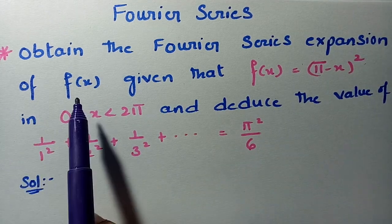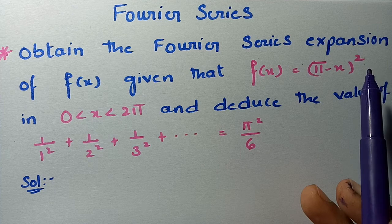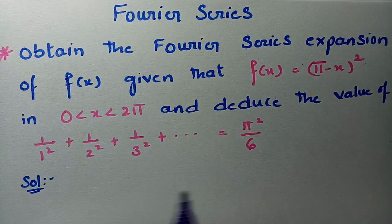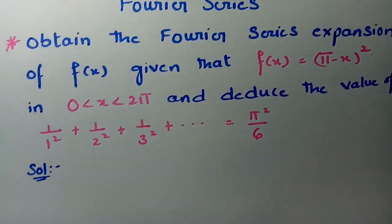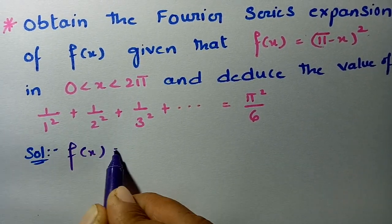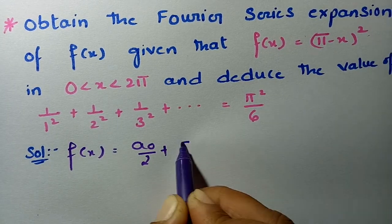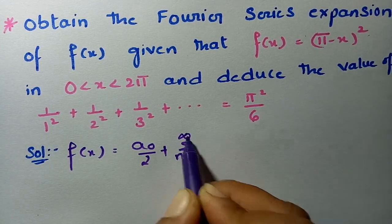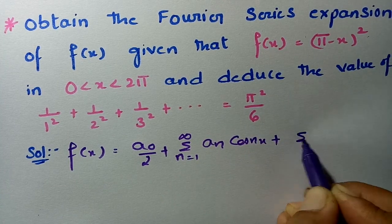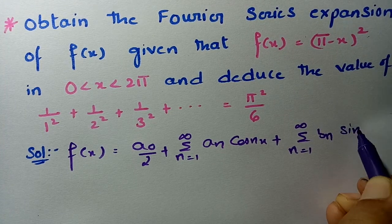Obtain the Fourier series expansion of f(x), given that f(x) = (π - x)² in 0 < x < 2π, and deduce the value of this. According to the Fourier series, we have the formula: f(x) = a0/2 + Σ(n=1 to ∞) an·cos(nx) + Σ(n=1 to ∞) bn·sin(nx).